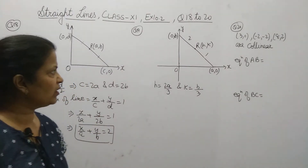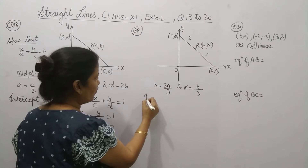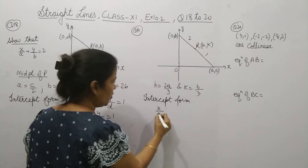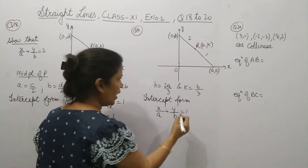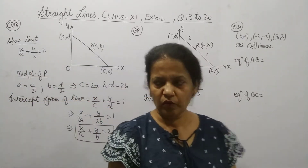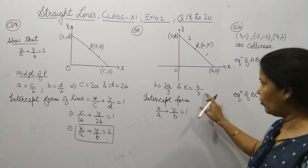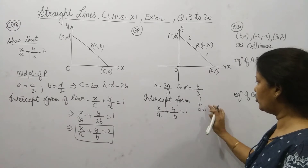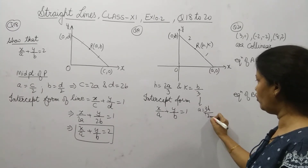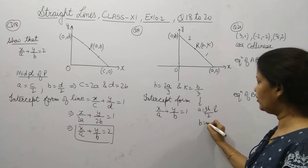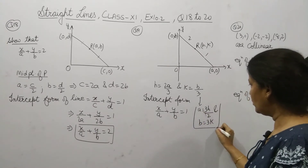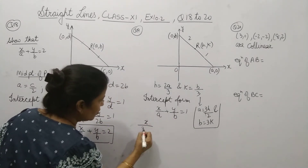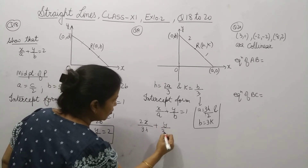Since again they are talking about the intercept form, the intercept form of the equation of a line is x upon a plus y upon d equals 1. We will find out the value of a and b from h and k. So a equals 3h upon 2 and b equals 3k. We substitute these values, giving the next step: x upon (3h/2) plus y upon 3k equals 1.